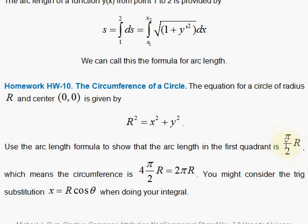So set up the integral here using the equation of the circle, and see by doing the integral that you indeed, for the first quadrant, obtain π/2 times r, the radius.